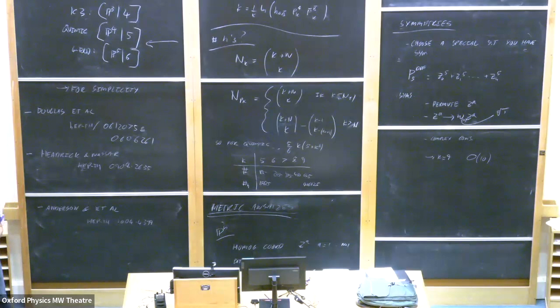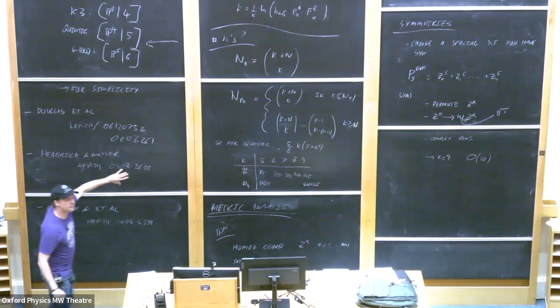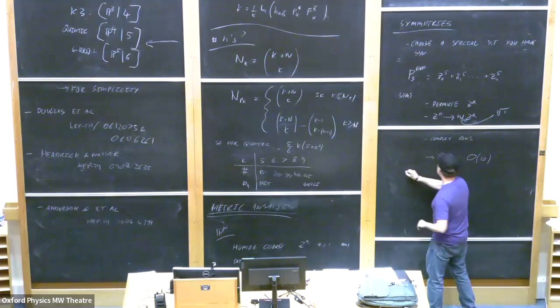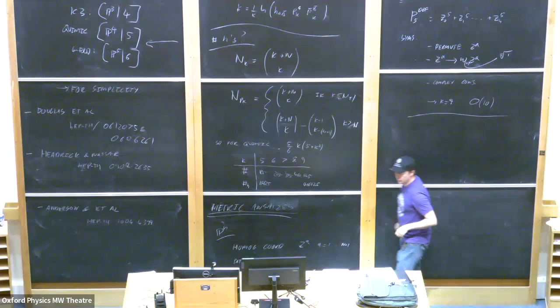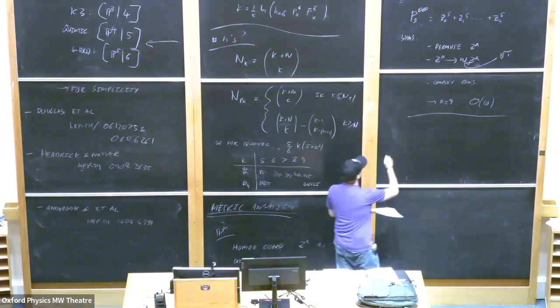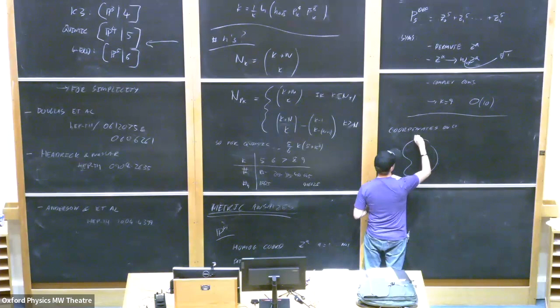The one almost universally used in the literature is the Fermat quintic, which Lara mentioned: instead of an arbitrary degree five polynomial in the coordinates of P^4 (which has about 126 terms), people write down Z_0^5 + Z_1^5 + ... + Z_4^5 = 0. If you don't impose something like this, you're doomed at least with these classical methods. This gives you symmetries: you can permute all the coordinates, multiply them each by a fifth root of unity, and also use complex conjugation. Using these symmetries to restrict the ansatz — only including polynomials that respect the symmetry — at K=9 you're left with order 10 parameters. That's much better.